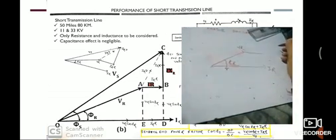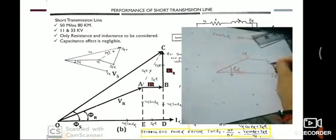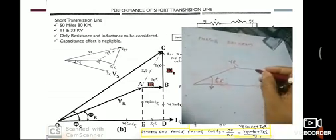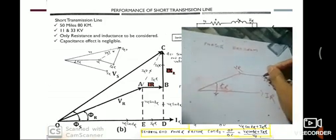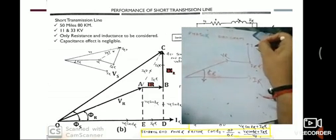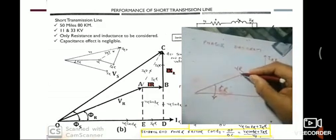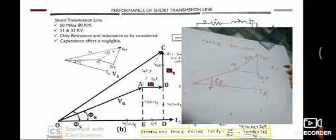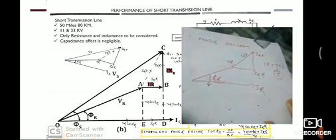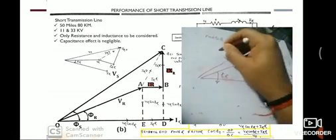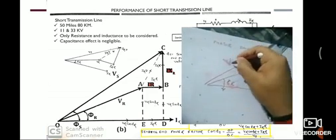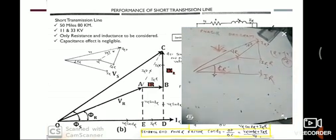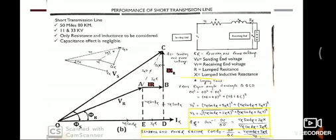When current enters the resistance, the voltage drop is Ir multiplied by R — this is always in phase with Ir. When it enters the inductance, the voltage drop is Ir multiplied by X, which leads by 90 degrees. The combined drop is Ir·Z, where Z = R + jX. The total phasor summation gives VS.